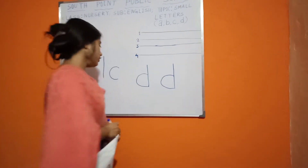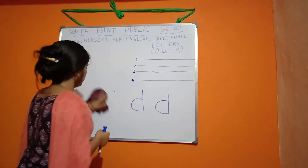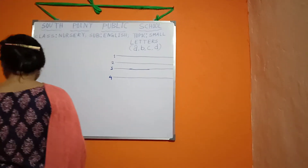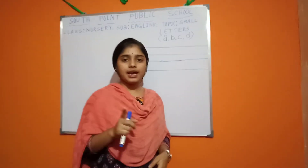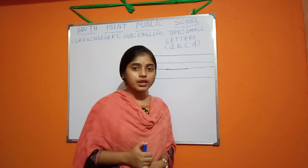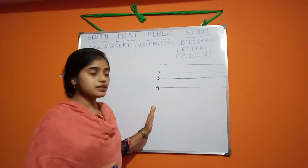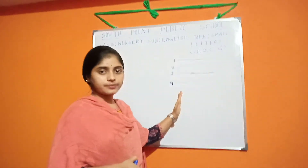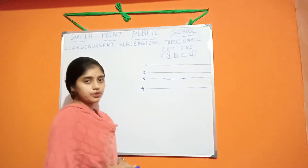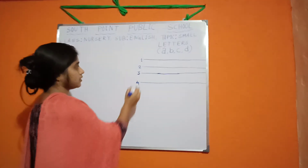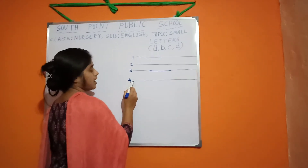Clear? Today we learned about A, B, C and D. Now you have to learn how we write those letters in our 4-rule page. Suppose it's our 4-rule page. There are 4 rules: 1, 2, 3 and 4.